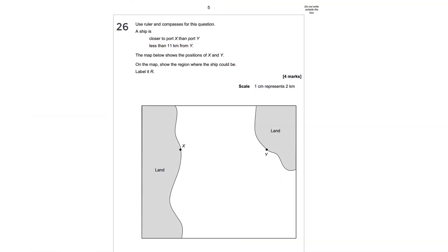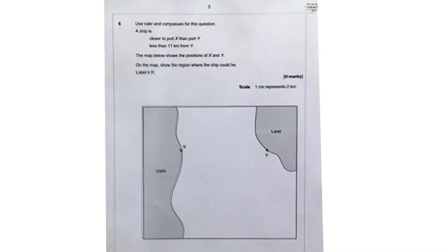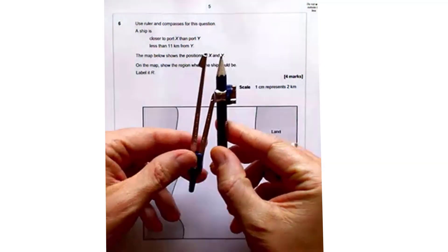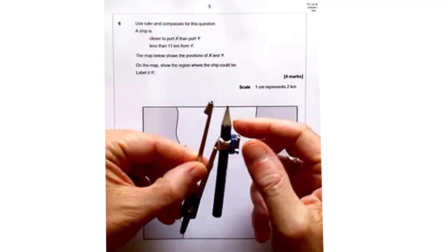Use the ruler and compasses for this question. A ship is closer to port X than port Y, less than 11 kilometres from Y. The map shows the position of X and Y. On the map show the region where the ship could be, label it R. So we're going to have to use our knowledge of loci of various points and along with our compass skills to work out what the answer is. Now firstly, just a little bit of kit care.